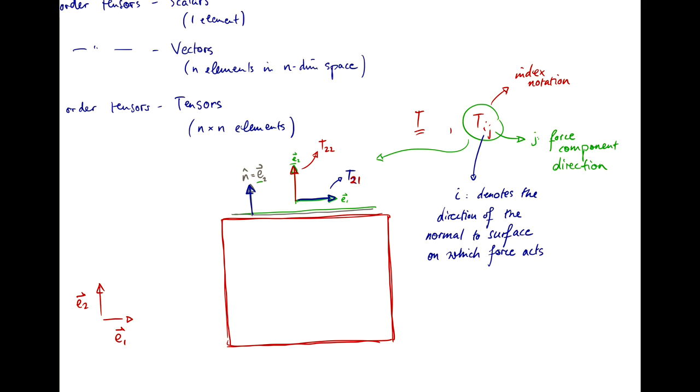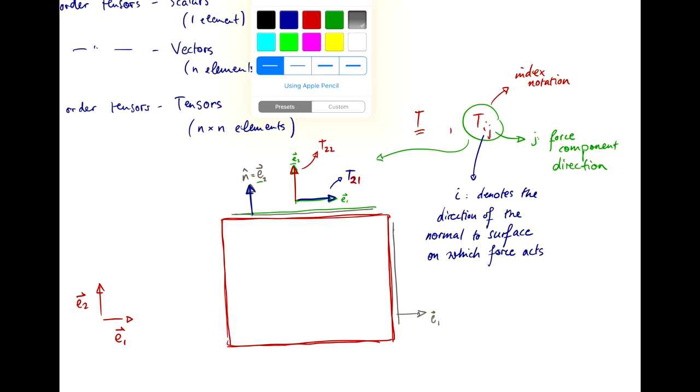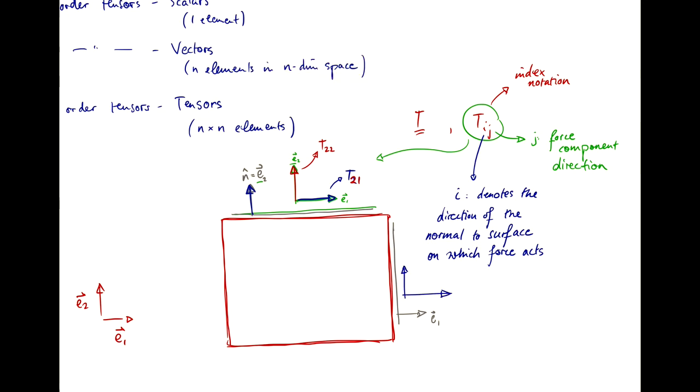Now, if we look at the surface down here with the normal in direction E1, then we again have two elements that are defined here for our stress tensor. The first one being T acting on the surface with normal 1 in direction 1, T11, and T12.